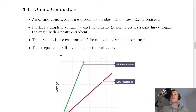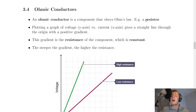In this video we're going to go over ohmic conductors. An ohmic conductor is a component that obeys Ohm's law, for example a resistor. We've seen an ohmic conductor, i.e. the resistor, used in the Ohm's law experiment.